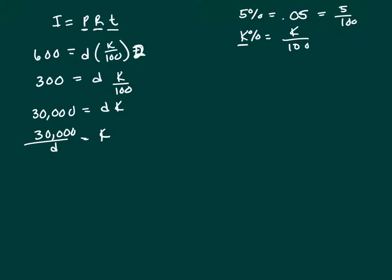So 30,000 over D equals K. Now once again, that's K. K percent is K over 100. So let's go ahead and get this in the correct format. So that's 30,000 over D, over 100.